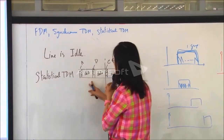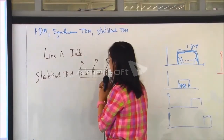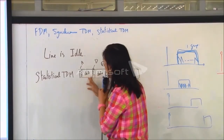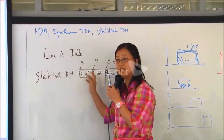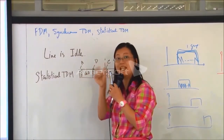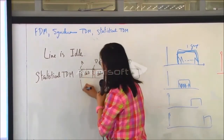So you can see that instead of sending only data, you also have to send the header — this is the extra bit overhead.